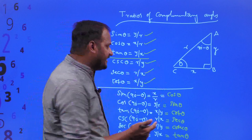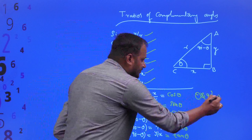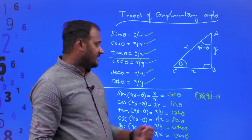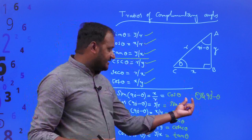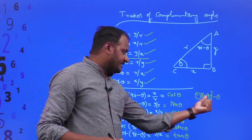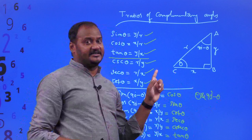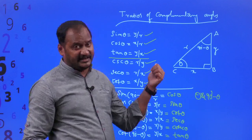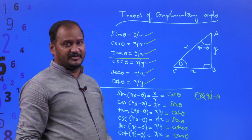Theta can be any acute angle. For example, if theta is equal to 30 degrees, then 90 minus 30 equals 60 degrees, and the trigonometric ratios of 30 and 60 degrees are equal to their co-ratios — which is what we identified in our tabular form also. This is the concept of trigonometric ratios of complementary angles, and you will have to remember this.